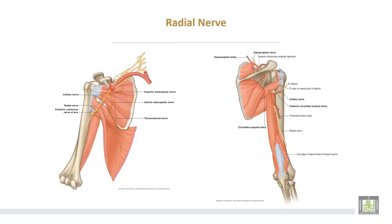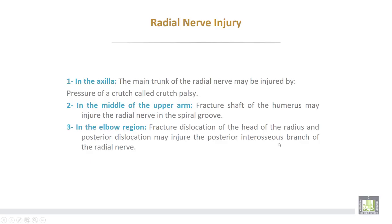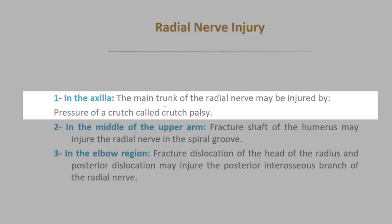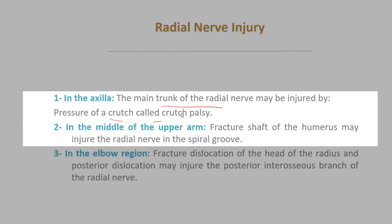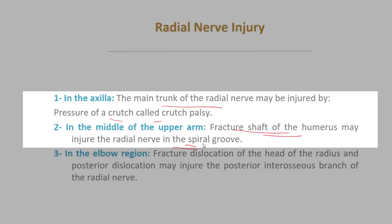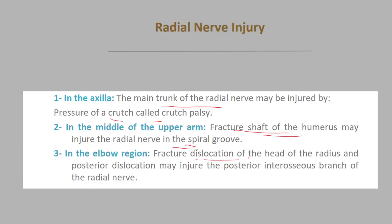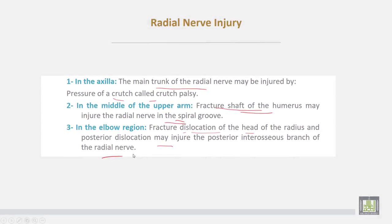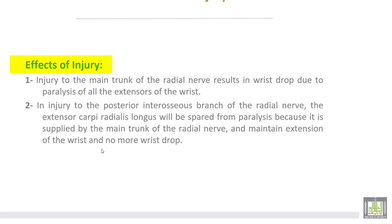The radial nerve arises from the posterior cord of the brachial plexus in the axilla, then is directed through the spiral groove posterior to the humerus. Radial nerve injury may occur in the axilla; the main trunk may be injured by pressure of a crutch, called crutch palsy; in the middle of the upper arm by fracture of the shaft of the humerus; in the spiral groove; or at the elbow by fracture-dislocation of the head of the radius, which may injure the posterior interosseous branch.